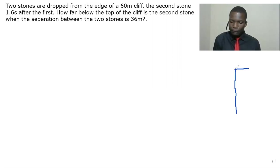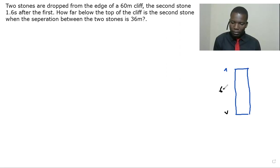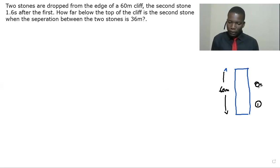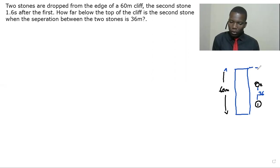Let me illustrate this so you get the concept. Let this height be 60 meters. The first stone is dropped here, and then the second stone is also dropped. The separation distance between these two stones is 36 meters, and we are being asked to calculate this distance.